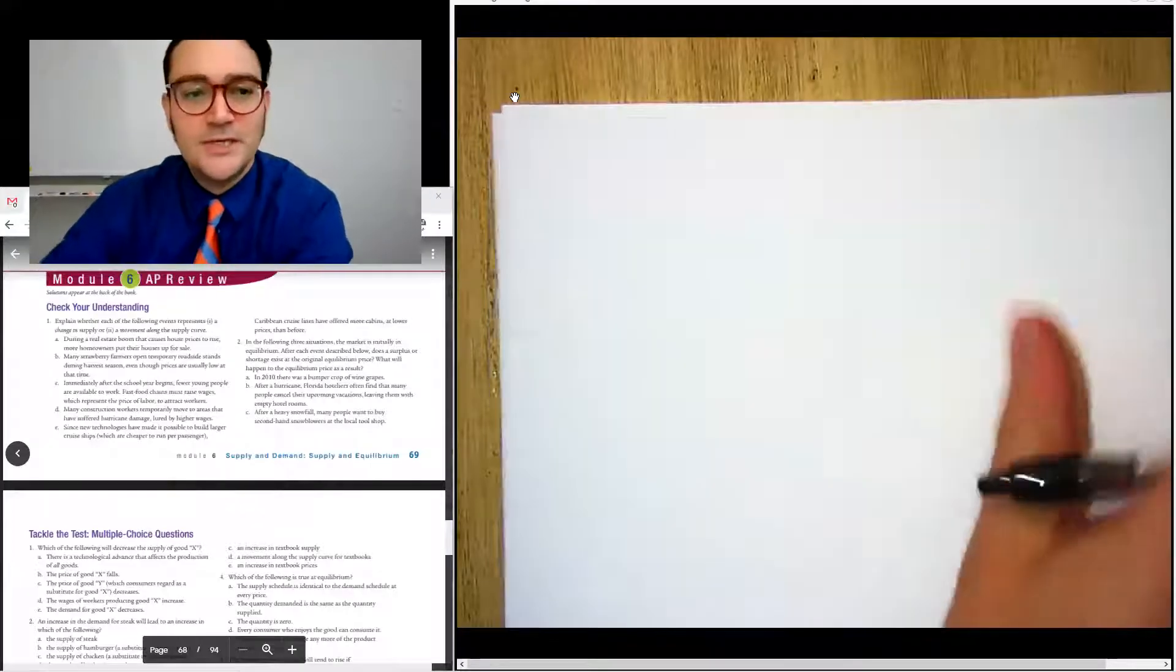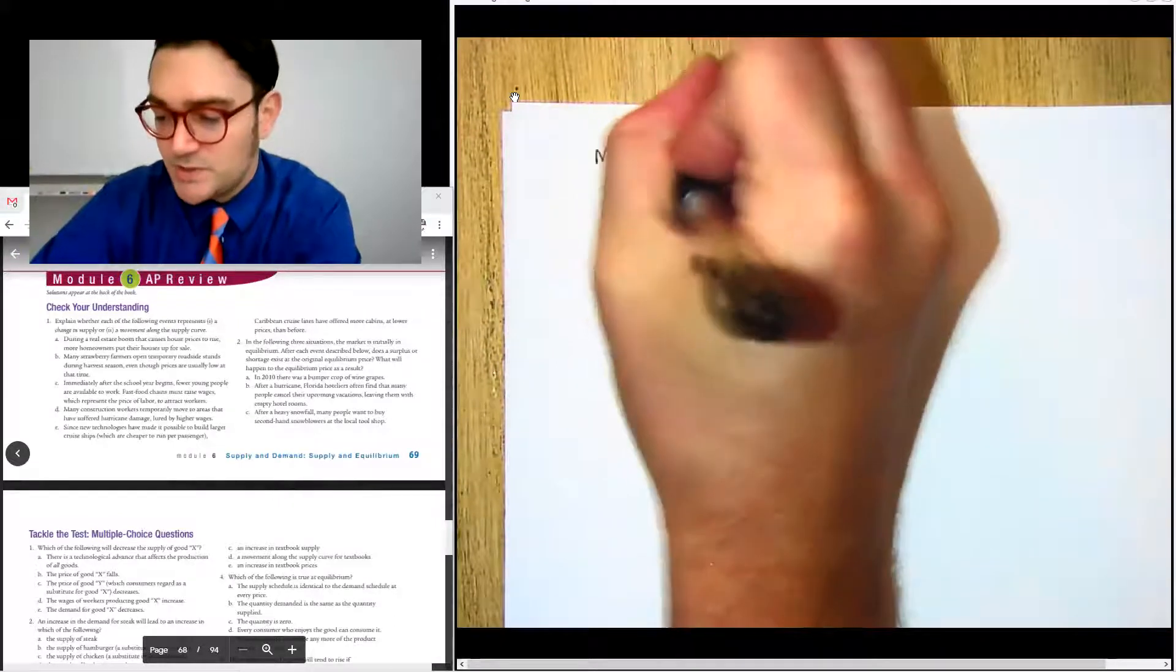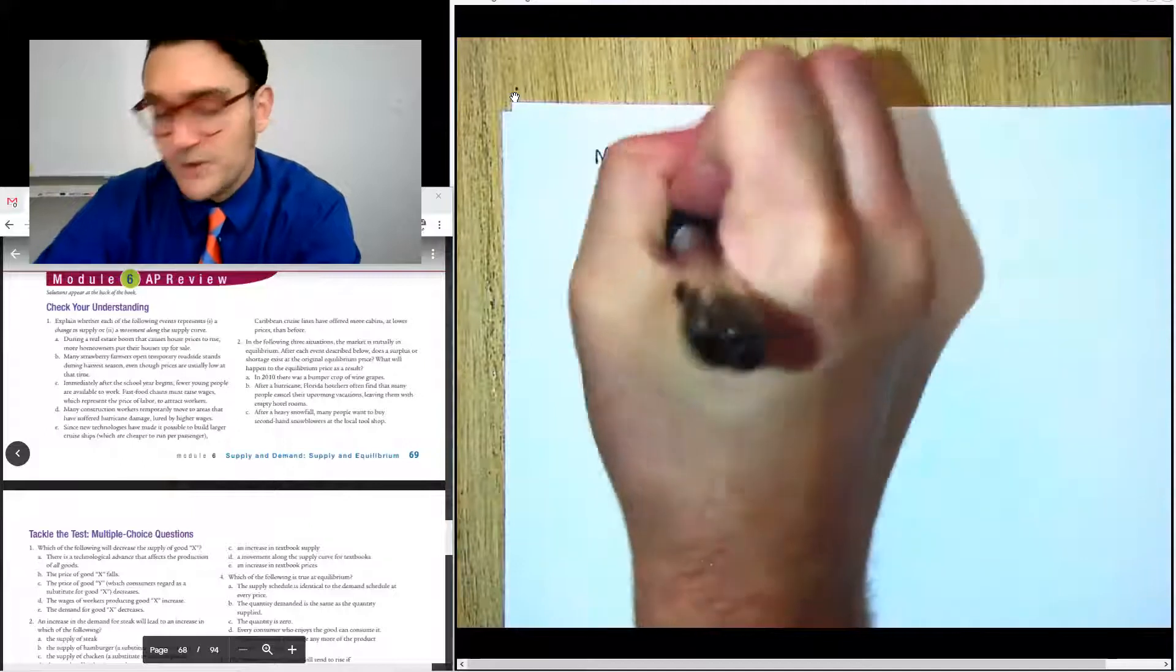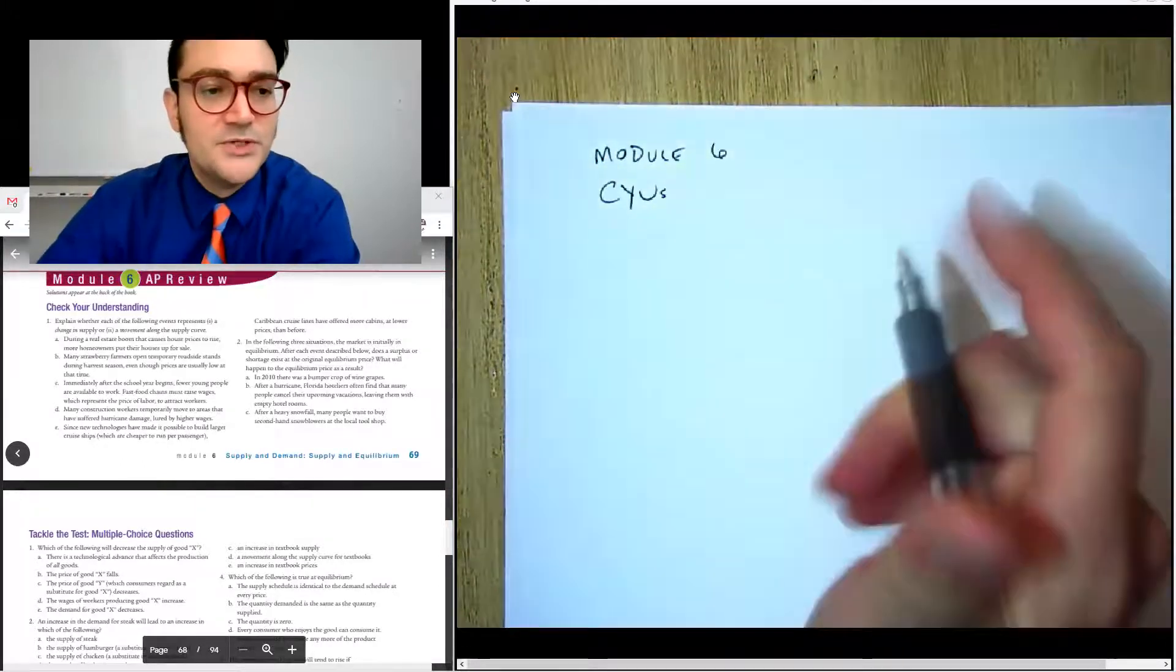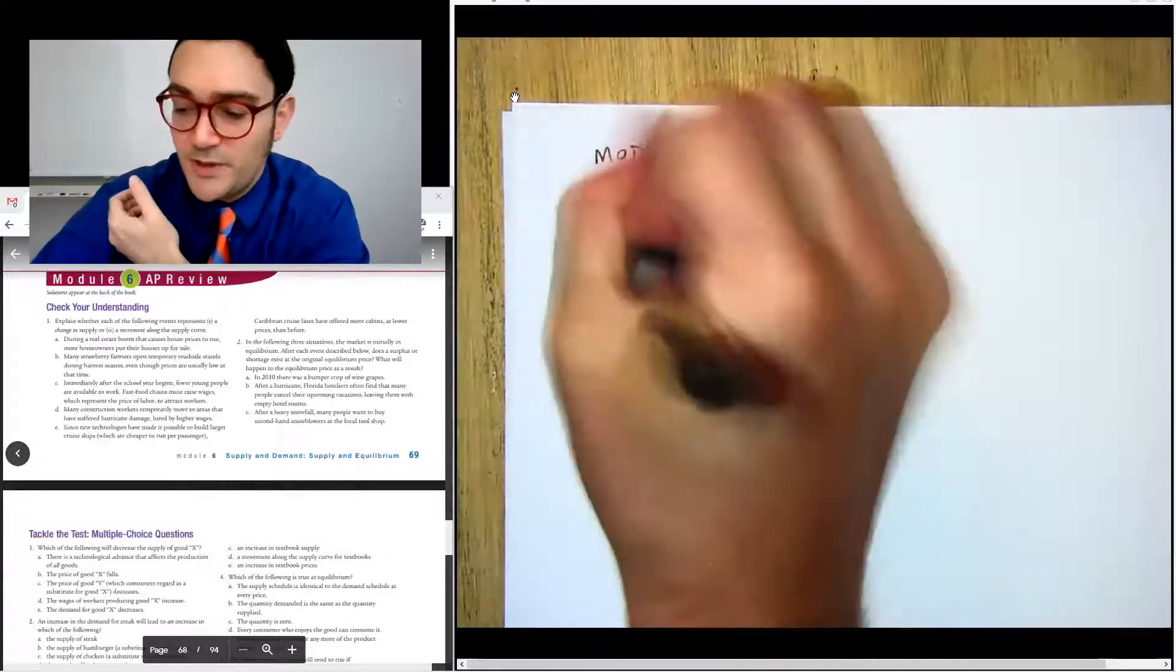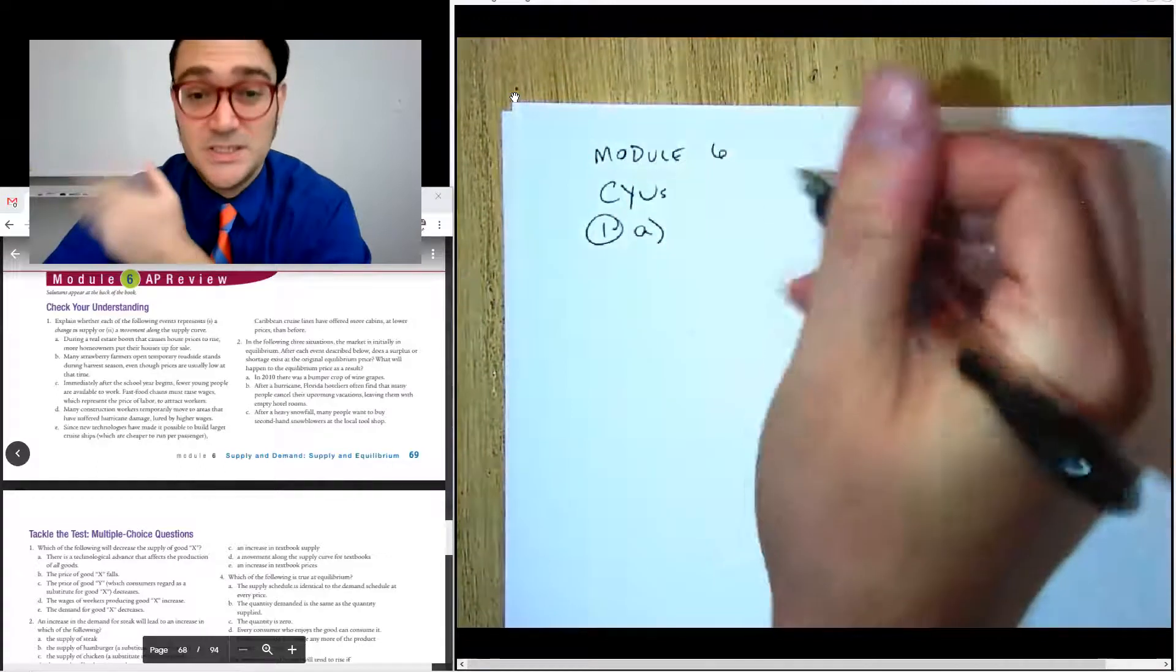Hi everybody! So in this video we're going to take a look at module six. It's the extra practice related to supply and equilibrium. So for the first one, for check your understandings, there are two of them. The first check your understanding question is about supply and it's basically saying, is it a change in quantity supplied or is it a change in supply?